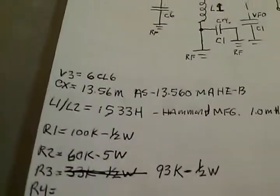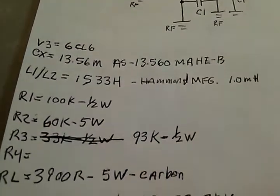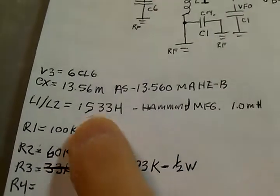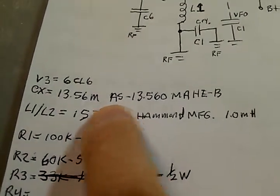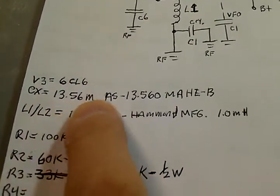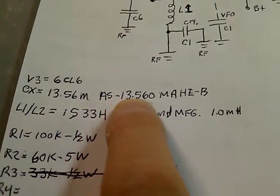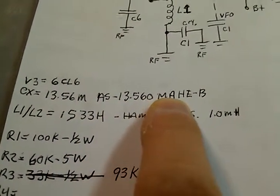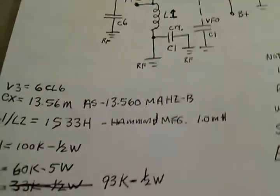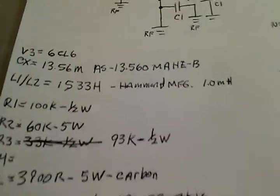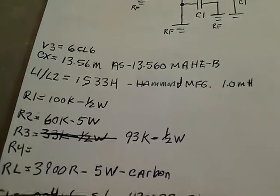And here's the values of the crystal. It was a 13.56 MHz, dash 13.560 MHz, dash B. Got that on I believe it was Digi-Key. They're very cheap, 25 to 30 cents apiece, something like that.